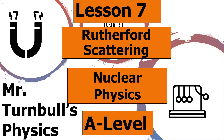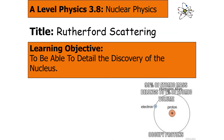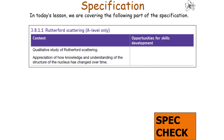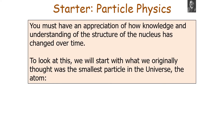Hello and welcome to today's lesson on Rutherford Scattering, which is part of the nuclear physics topic in AQA A-level physics. In today's lesson we're going to look at how we can detail the discovery of the nucleus. We should be able to describe how the nucleus was discovered, explain why the nucleus was not discovered earlier, and work out how close the alpha particle can get to the nucleus in Rutherford Scattering, covering AQA specification section 3.8.1.1.